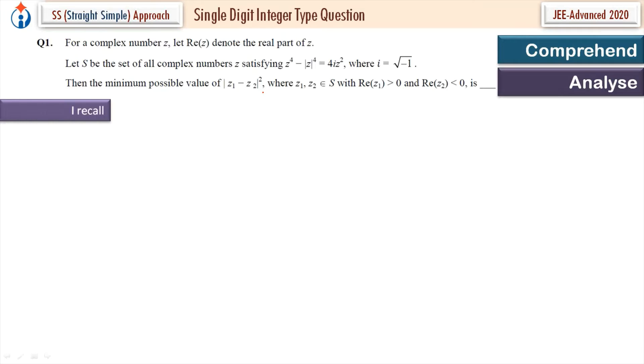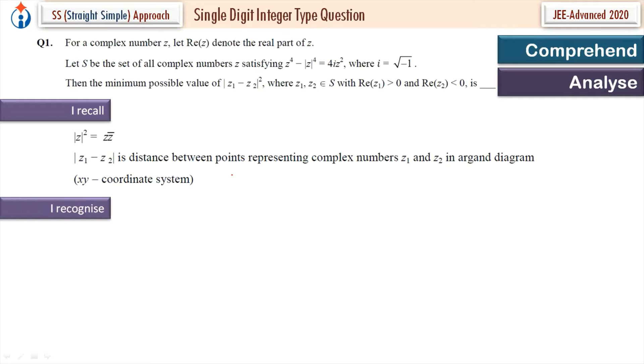Let's analyze. So I recall modulus of Z square is equal to Z times Z bar. Modulus of Z1 minus Z2 is distance between points representing complex numbers Z1 and Z2 in the Argand diagram, XY coordinate system, XY plane. These are basic results from NCERT and we will use them.